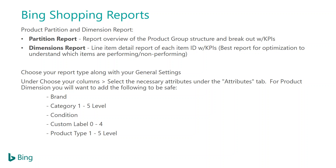I definitely recommend scheduling these reports on a weekly or bi-weekly basis just to keep track of how you're performing. Using the additional attributes will help you optimize your campaigns. When pulling a dimension report, make sure you add in: brand, category, condition, custom labels, and product type — those aren't automated, so you want to add them manually.